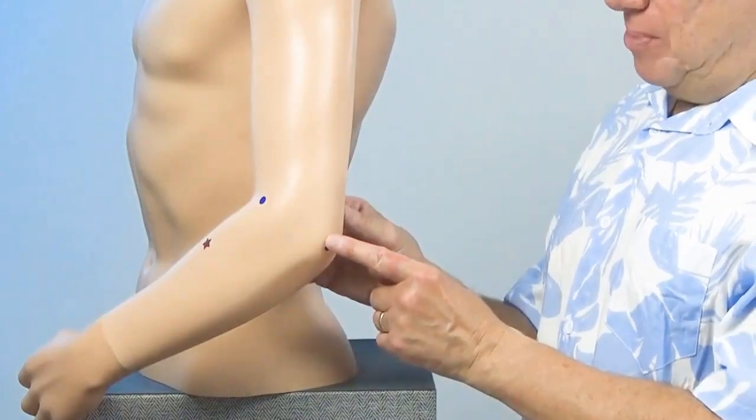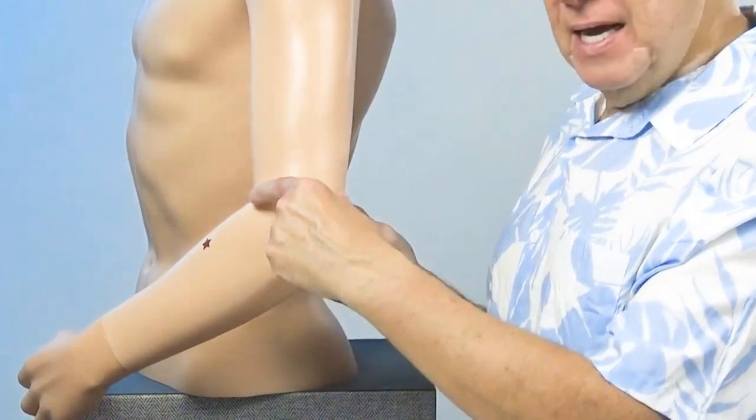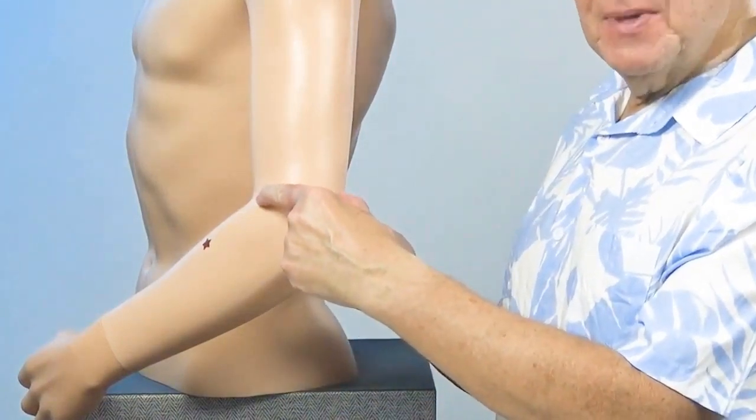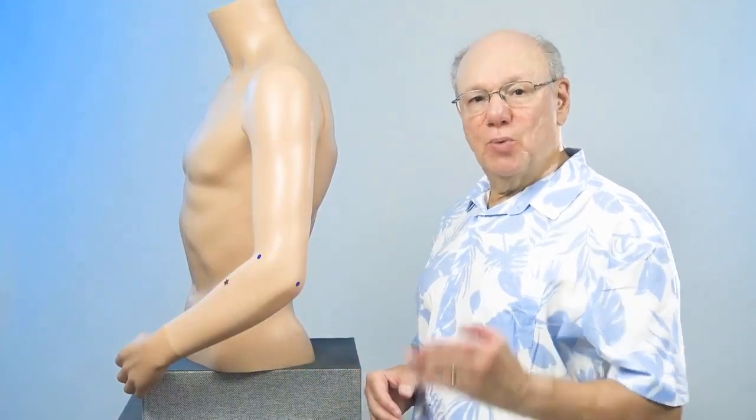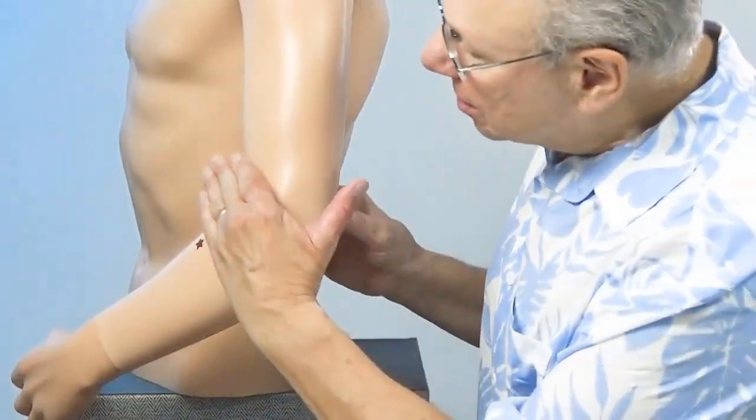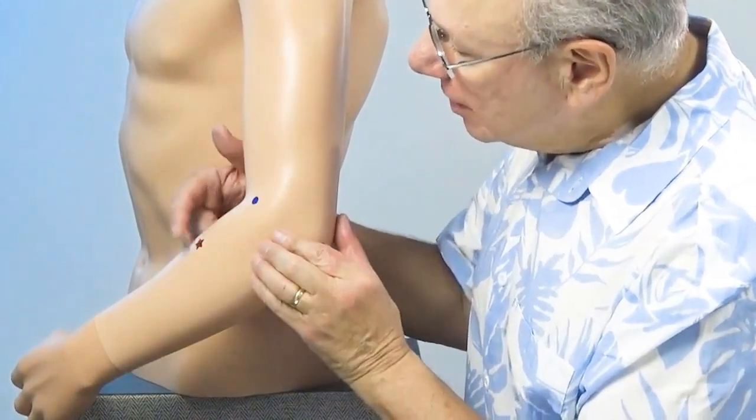Find the tip of the elbow, come over the bone, find a soft spot. Now, find the point that is the width of four fingers below that. Right over here.